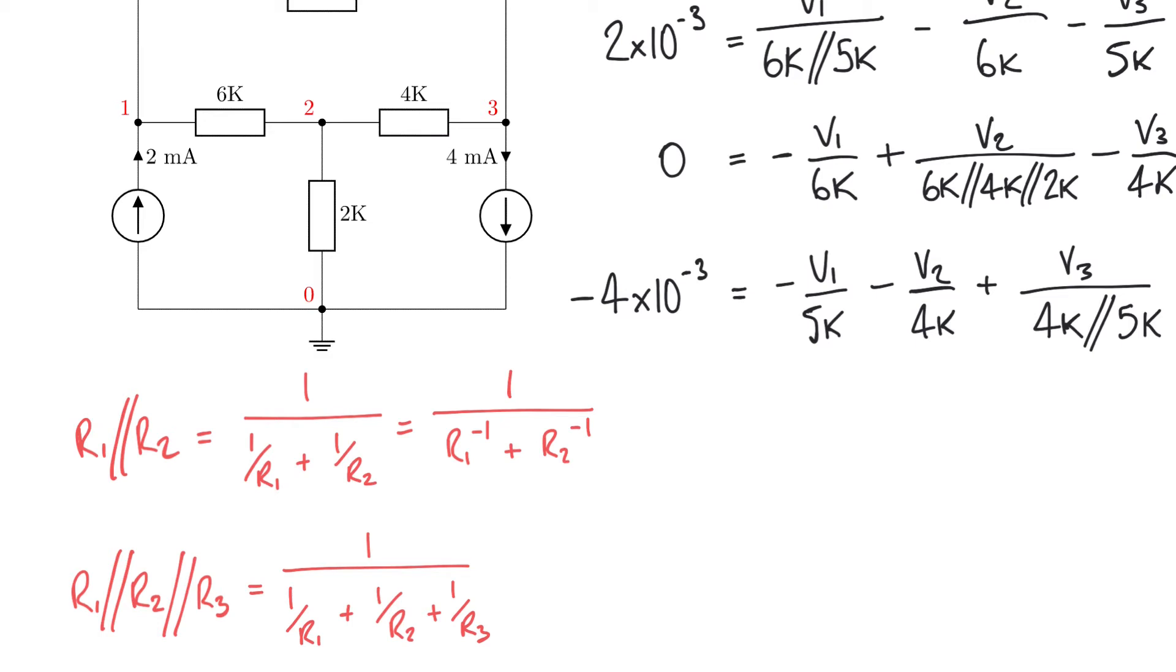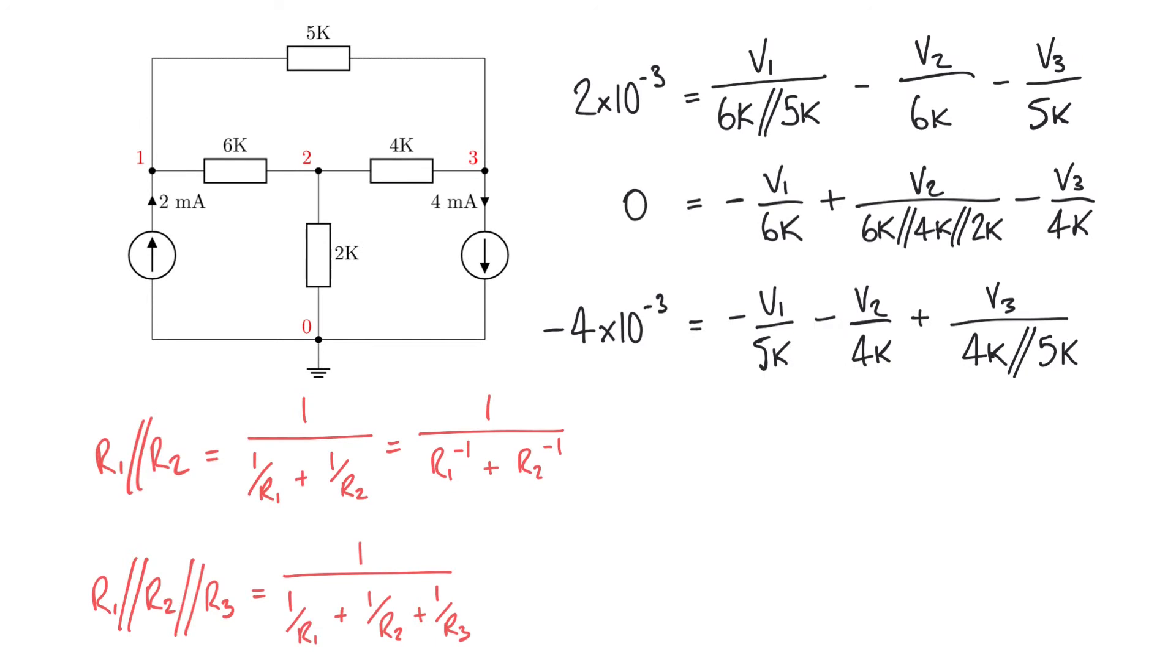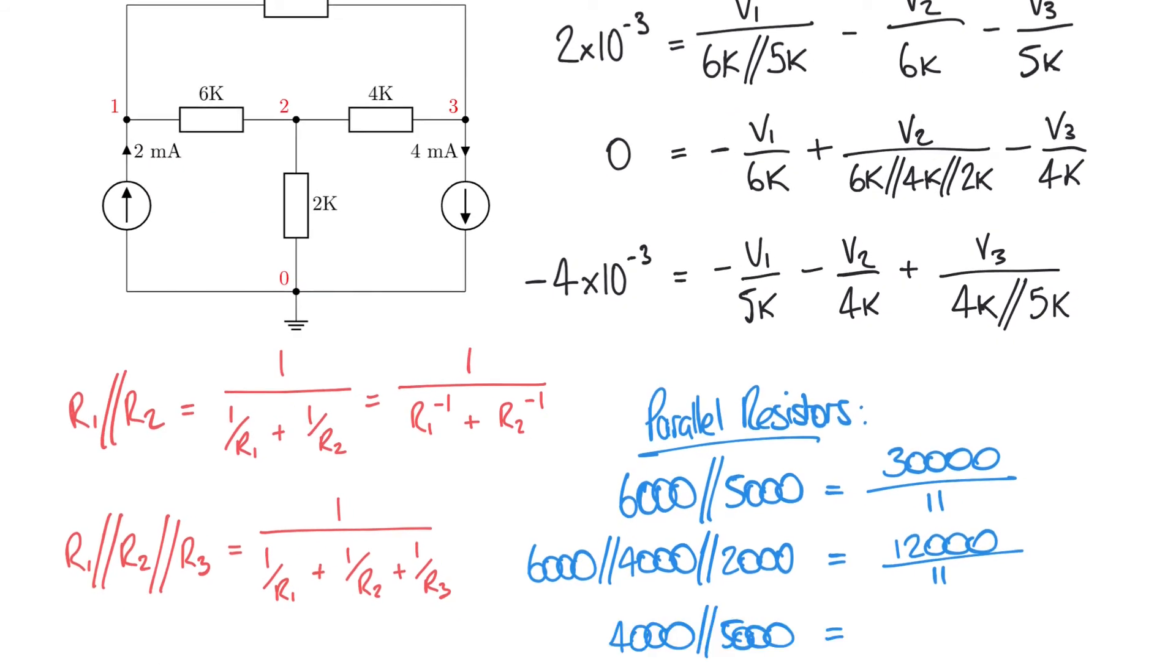We're going to apply this here because we have some instances where we have parallel resistors in our equations. Let's handle those separately. We have 6k in parallel with 5k, so 6000 in parallel with 5000, and that gives us 30000 over 11, just to keep that as a rational number in fractional form. We have 6k, 4k, and 2k in parallel, and that comes out as 12000 over 11.